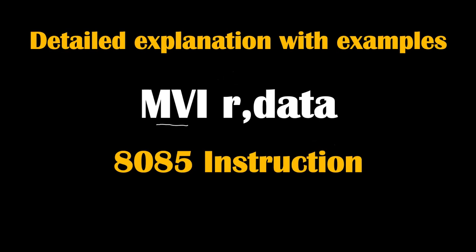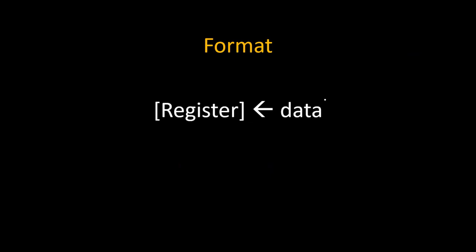Now let's see the format of this instruction — that is, what does this instruction actually do. This instruction simply copies the immediate data given in the instruction into the specified register. For example, if we write MVI B, 32H, this 32H immediate data will get copied inside the B register. The square bracket notation means 'content of register.'